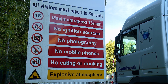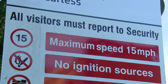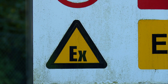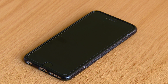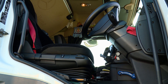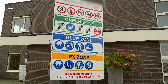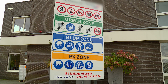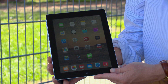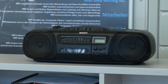Due to the hazards associated with the presence of solvent vapors and liquids, under no circumstances are sources of ignition permitted. Mobile phones and all other potential sources of ignition must be switched off and either handed in at the designated area or secured inside the vehicle. These include lighters, electronic cigarettes, matches, Bluetooth accessories, tablets, radios and wearable technology.